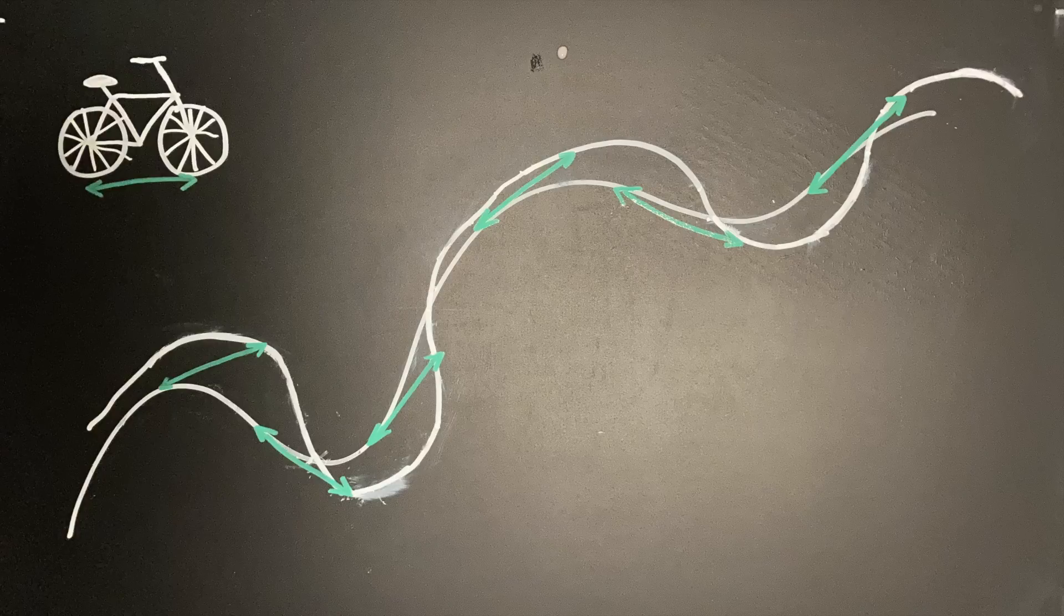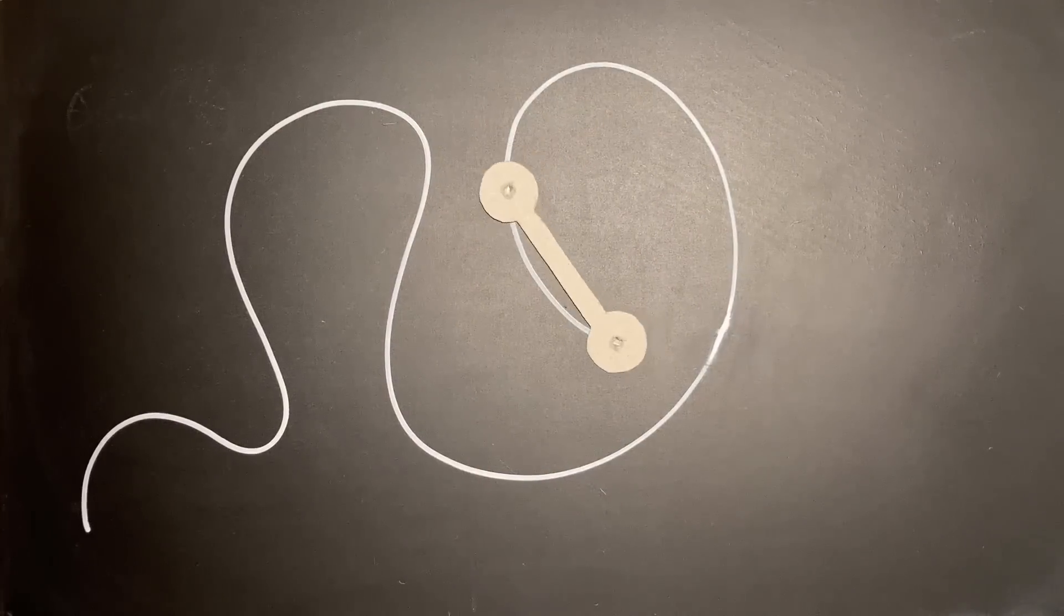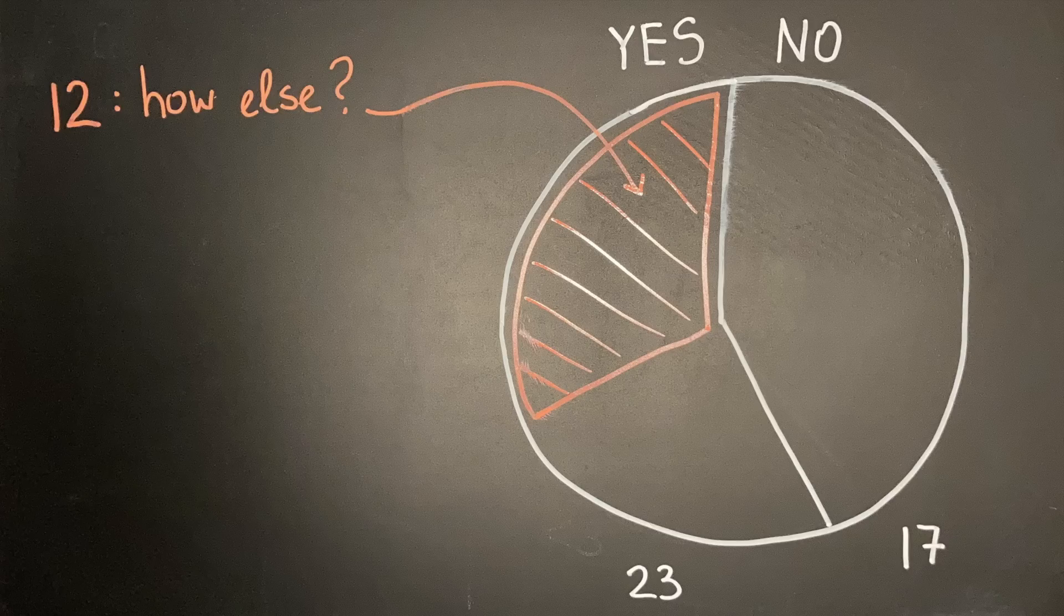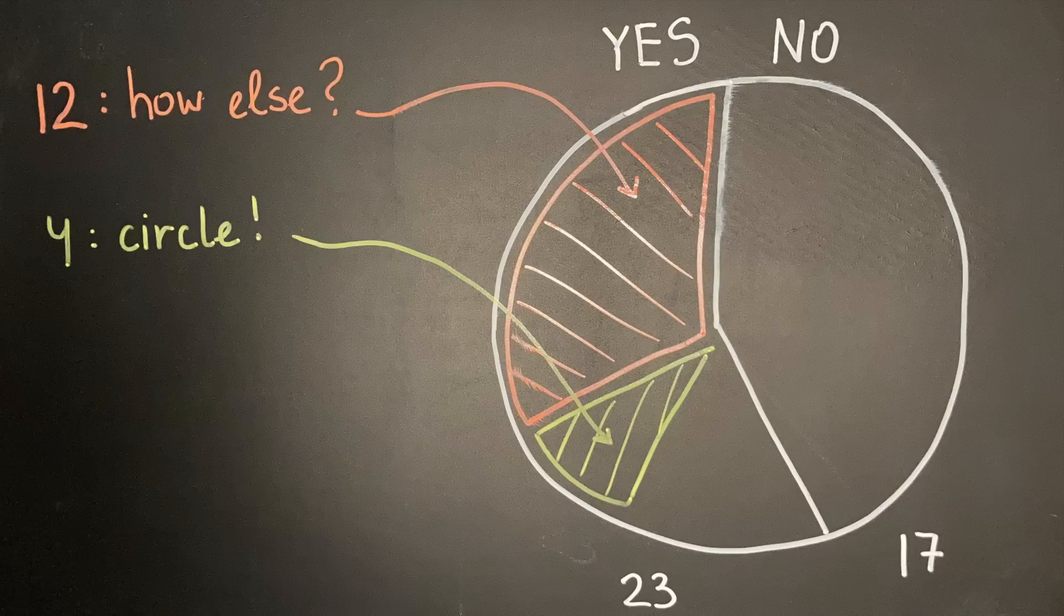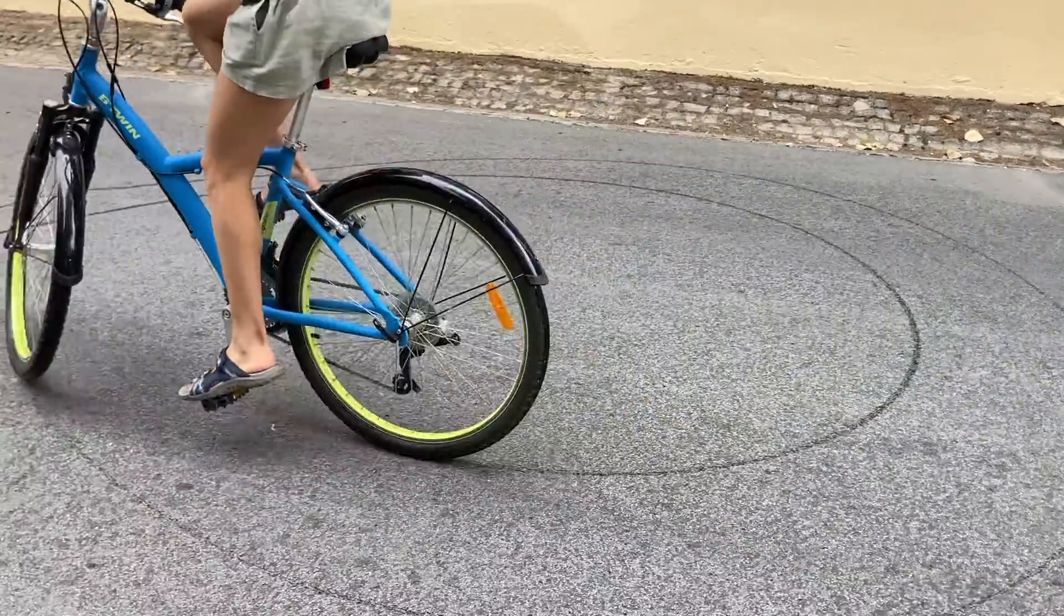If this was the only restriction though, nearly any unicycle track could still be created by a bicycle. By the way, 10% of the survey takers suggested riding in a circle to force the two tire tracks to coincide. However, this would actually cause the back wheel to trace a smaller ring inside of the front wheel's track.